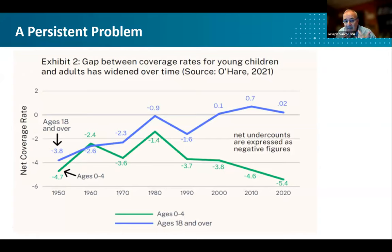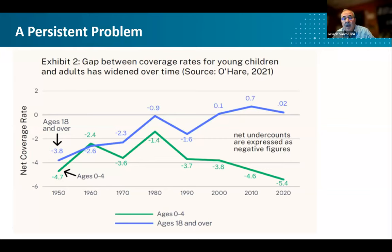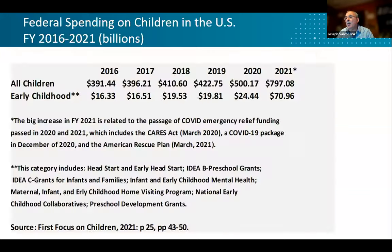The net undercount problem among young children has gotten more serious over time relative to other age groups. Looking at the population 18 and over versus the population under five, you can see net undercount has gotten worse over the decades. It is a serious problem. Having worked in the census field, I know that outreach is very important — but one of the things we need to come to terms with is that outreach by itself is not sufficient to solve this problem. The Census Bureau needs to be more creative in its use of administrative data.